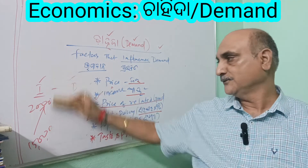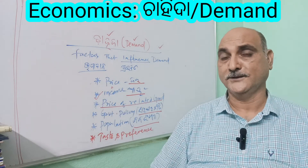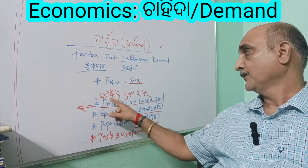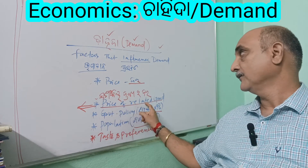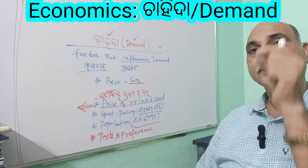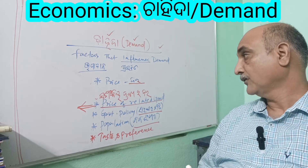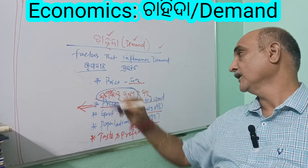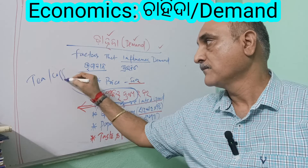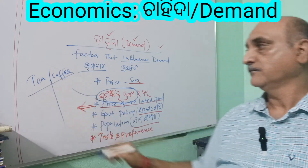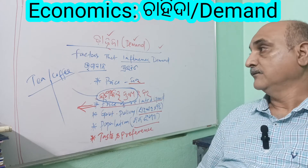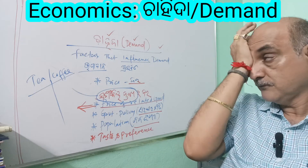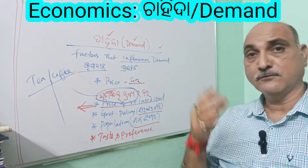Next, let's look at the Price of Related Goods. How does the price of related goods influence demand? For example, in your house there are tea and coffee. You can have either tea or coffee.